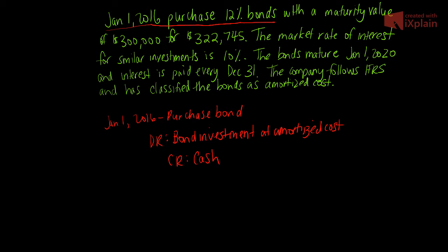We always record bonds on our balance sheet at the present value of the cash flows associated with the bond. In this example, we've been told what we paid, so we bought this bond at a premium — we paid more than the face value. We don't need to calculate the present value because it's given, so we record $322,745 as our purchase price.